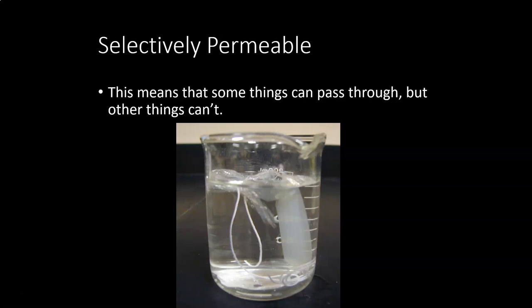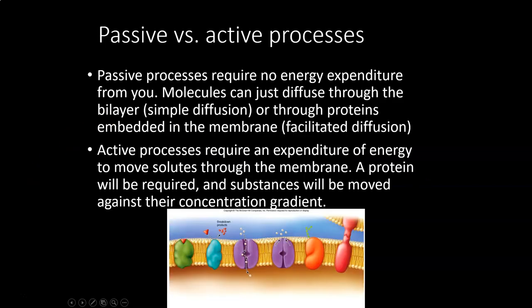Because the membrane is mostly phospholipid bilayer, and most of that bilayer is the fatty acid tail region, the majority of the membrane is nonpolar. Anything that is small and nonpolar will be able to get through that membrane with no problems. But things that are polar or ionic — meaning they have an electrical charge — will be repelled by the nonpolar part of the membrane and will not be allowed to pass through.